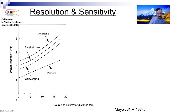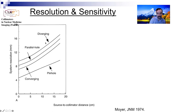Let's talk about both resolution and sensitivity. As the distance of the source to the collimator increases, resolution gets worse. Remember: a higher full width at half maximum (FWHM) value is worse - the larger the FWHM, the worse the resolution.